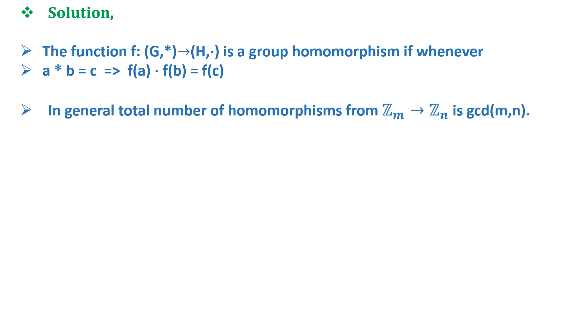In general, total number of homomorphisms from Zm to Zn is gcd(m,n). Here, total number of homomorphisms from Z8 to Z10 is gcd(8,10) which is equal to 2.